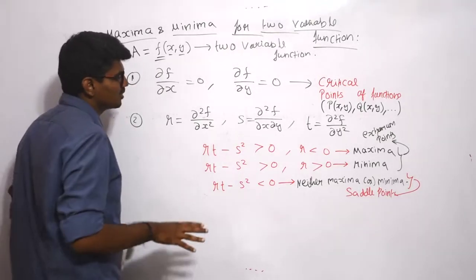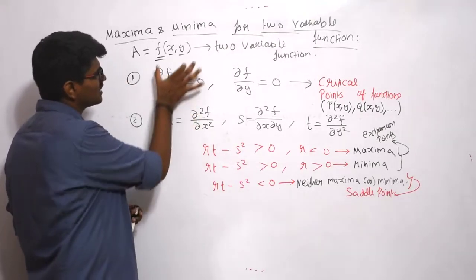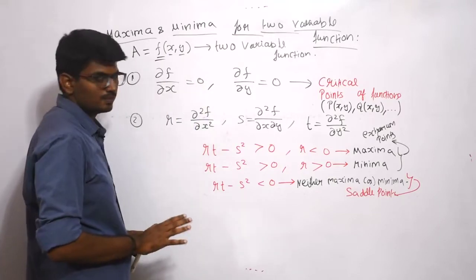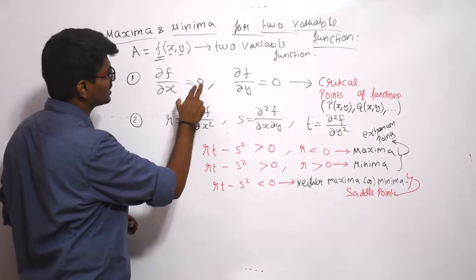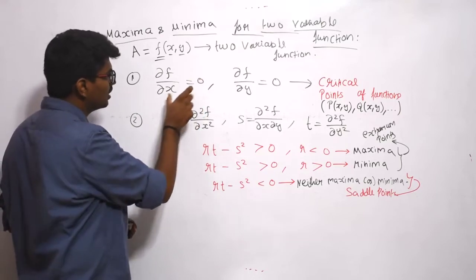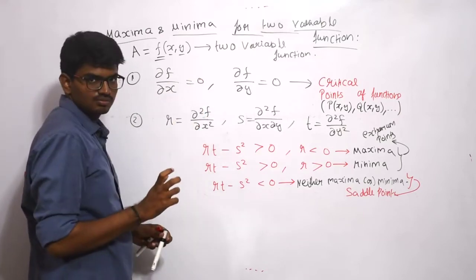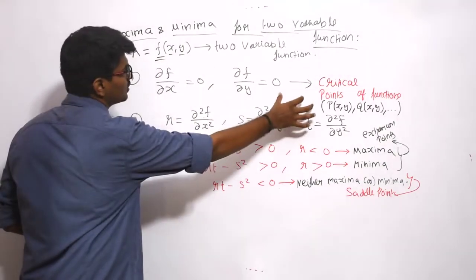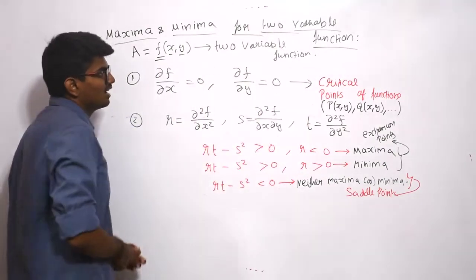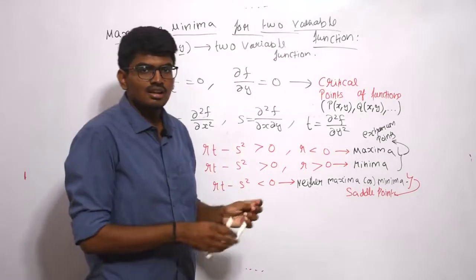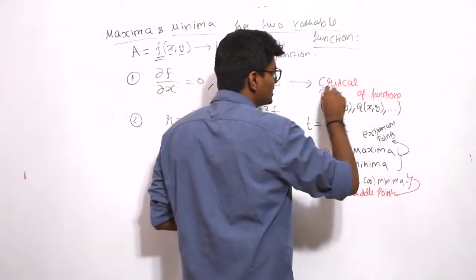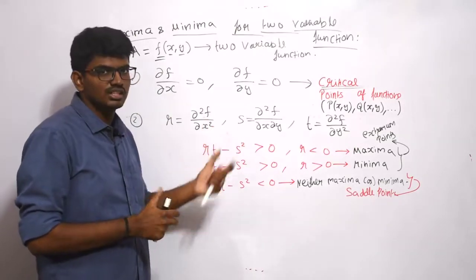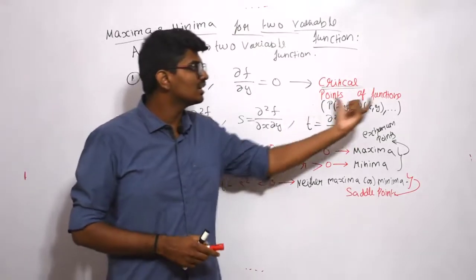The procedure is simple. The first step is to differentiate the function partially with respect to x and equate it to 0 — you will get some x values. Then differentiate partially with respect to y and equate to 0 — you will get y values. These are our critical points.